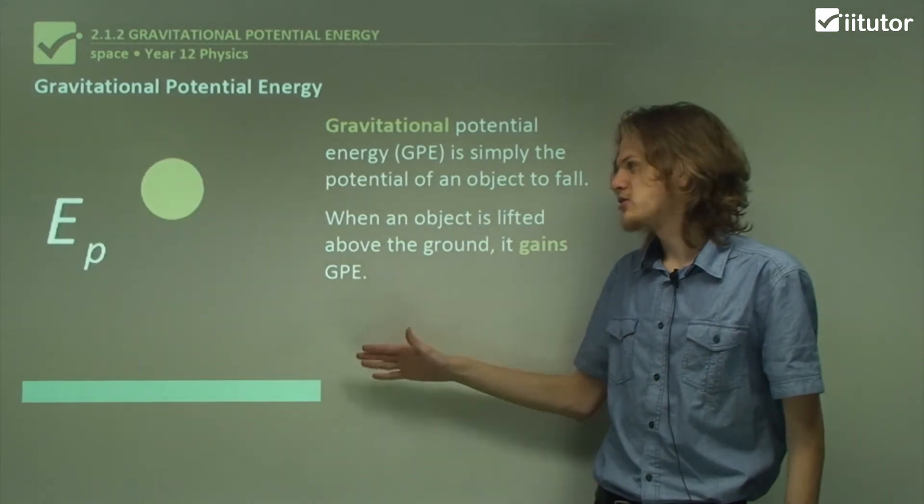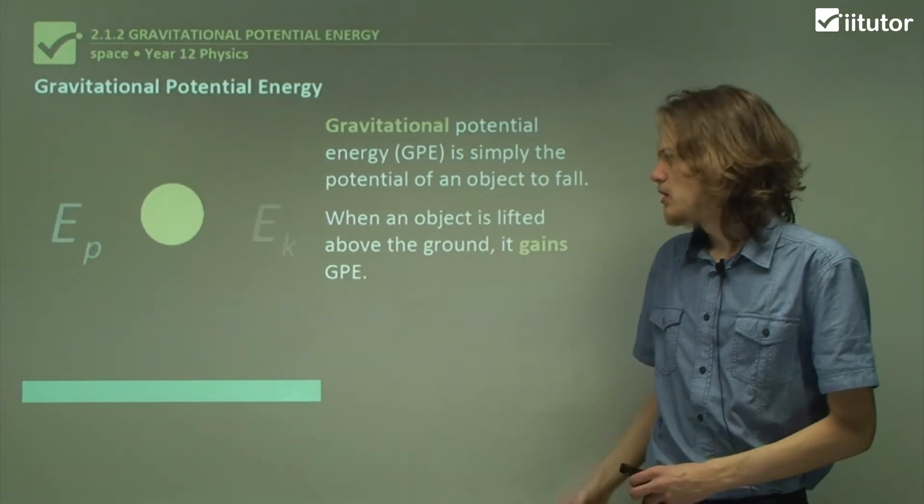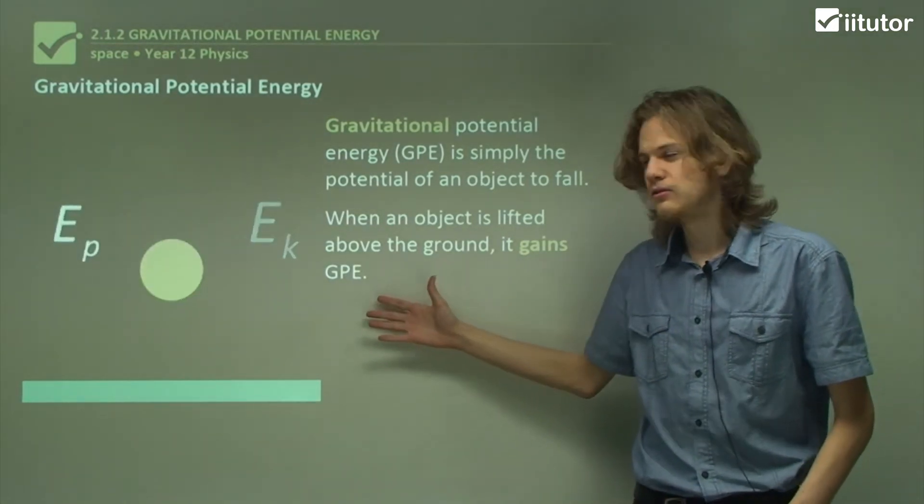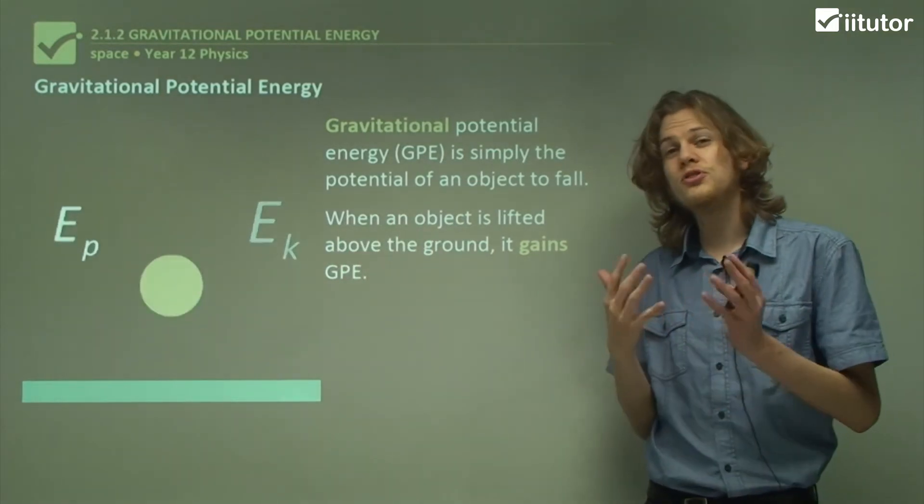At the same time it gets slower and slower, which means that its kinetic energy decreases. So it means that the kinetic energy of the object is being transformed into potential energy.